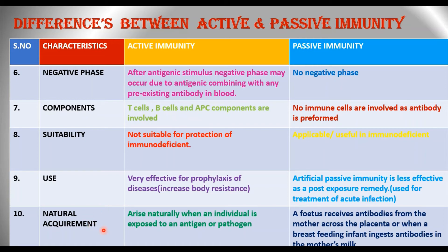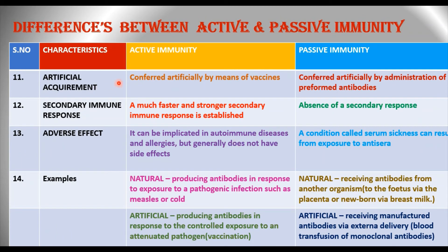Regarding natural acquirement: active immunity arises naturally when an individual is exposed to an antigen or pathogen. In passive immunity, a fetus receives antibodies from the mother across the placenta, or a breastfeeding infant ingests antibodies in the mother's milk — that is through colostrum. This is the natural mode by which active and passive immunity are acquired.